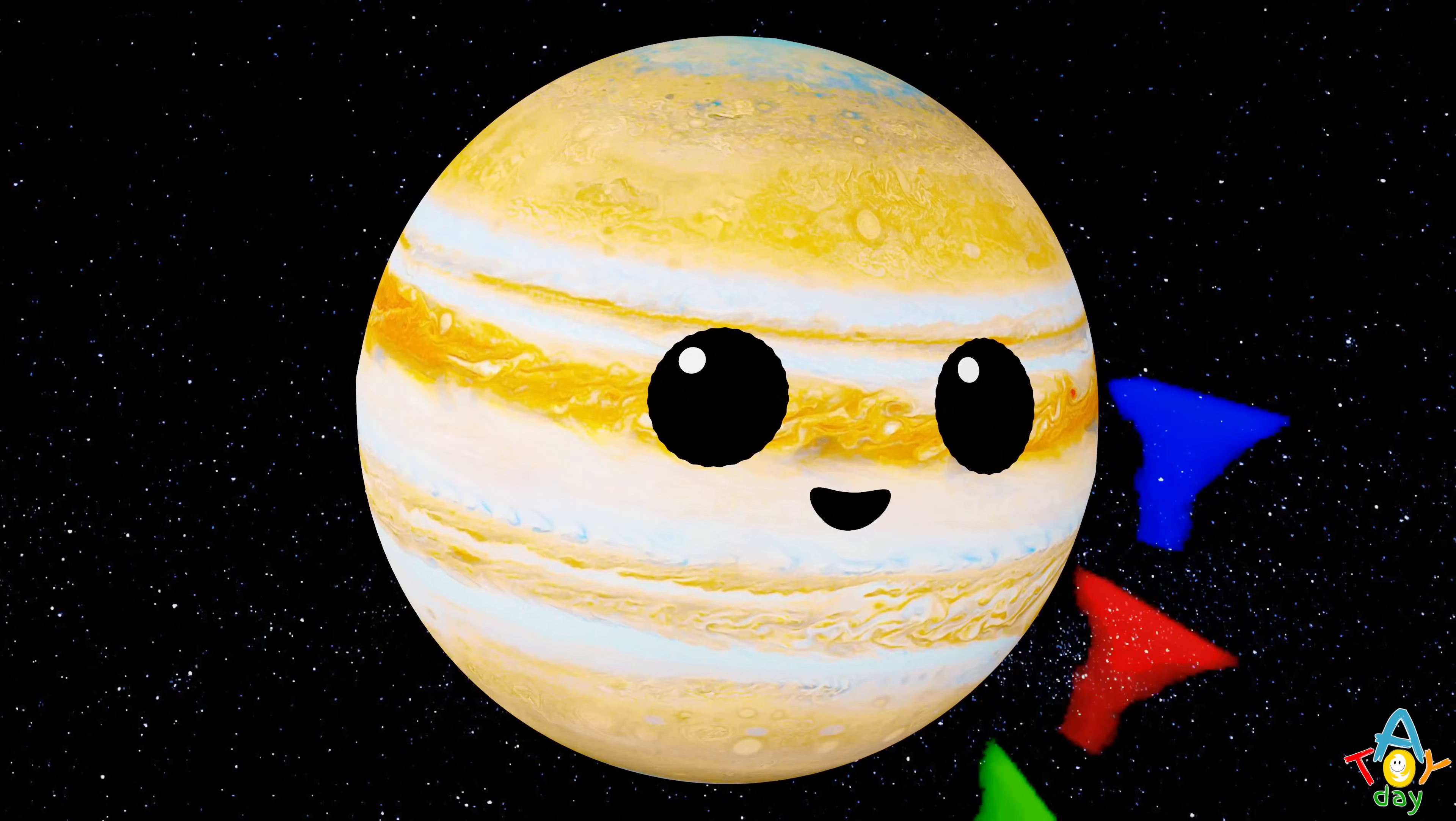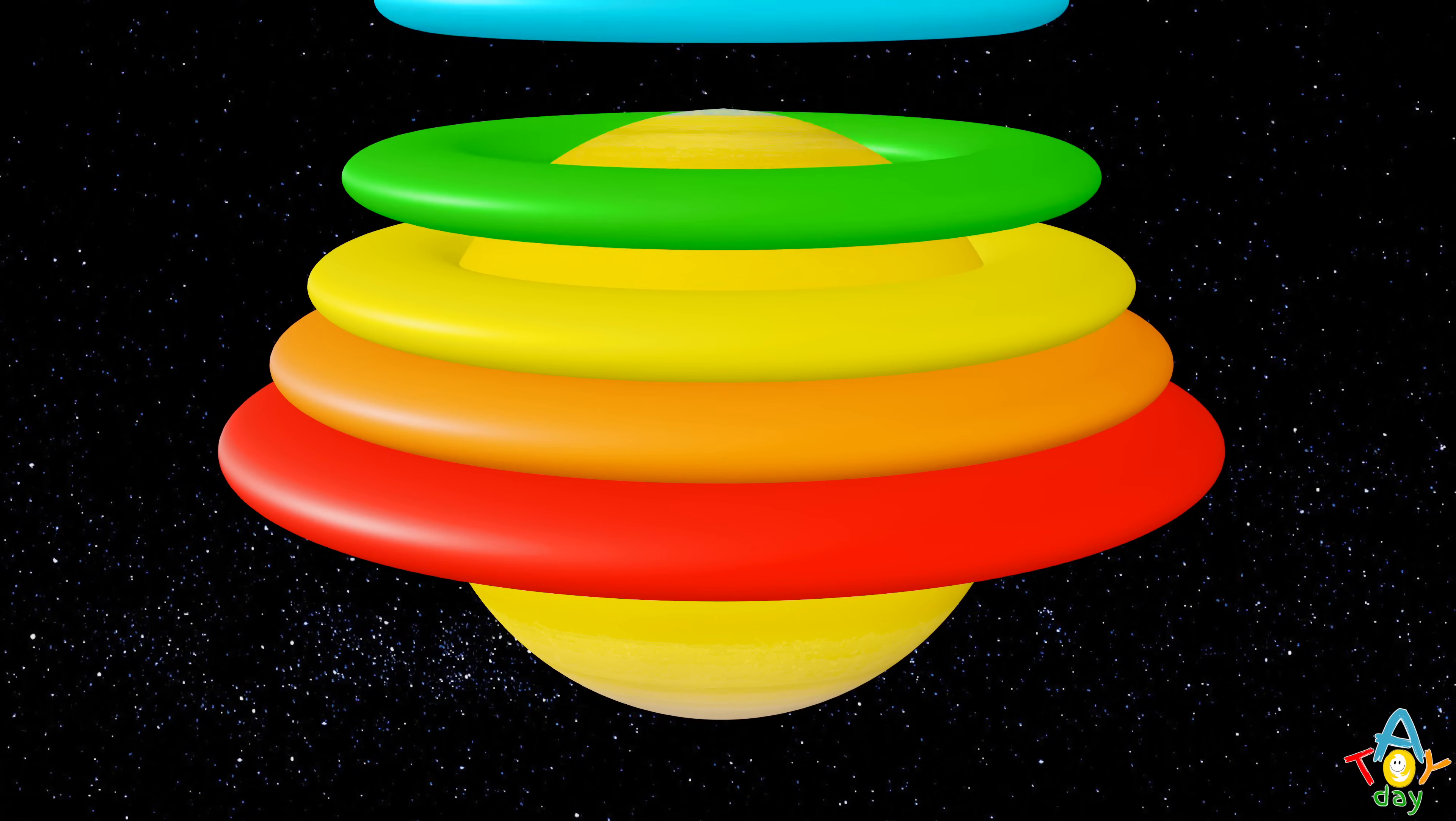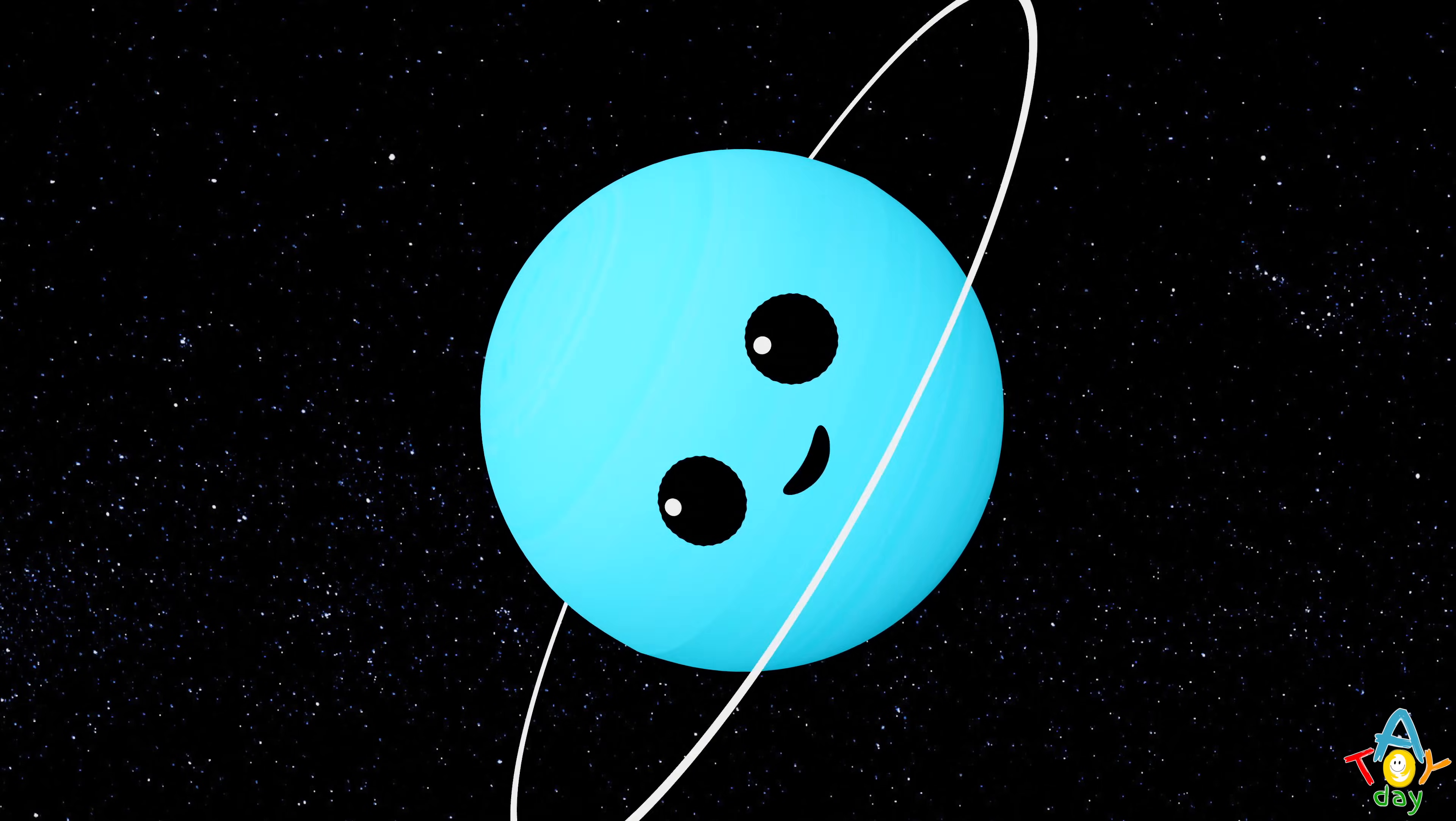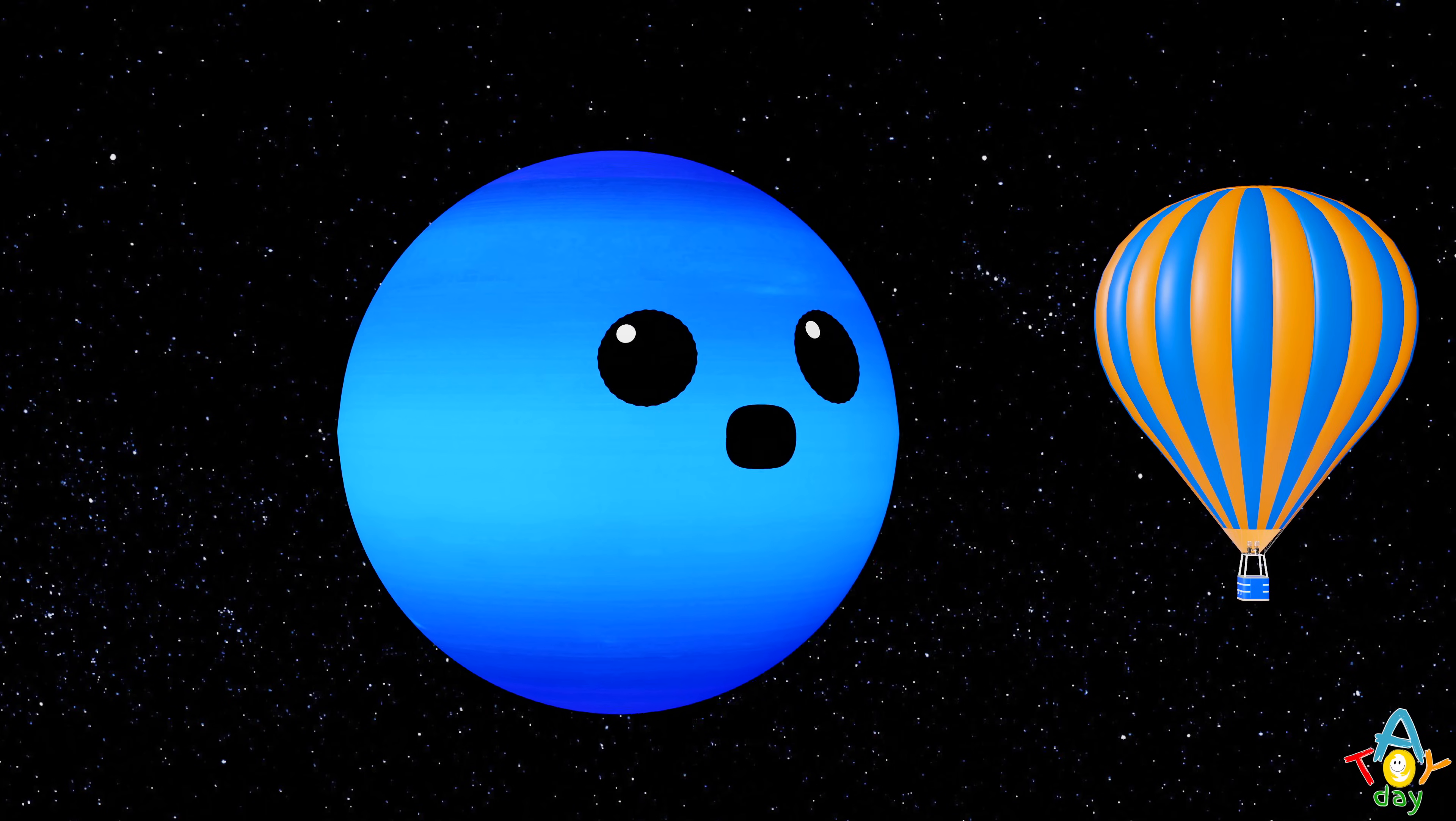Jupiter's giant with storms that spin. It's got more moves than I can pin. Saturn has rings that shine so bright, they circle around. What a sight! Uranus rolls like a sleepy ball, it tilts so much it might just fall. Neptune's far with winds that zoom, it spins in a deep, blue icy hue.